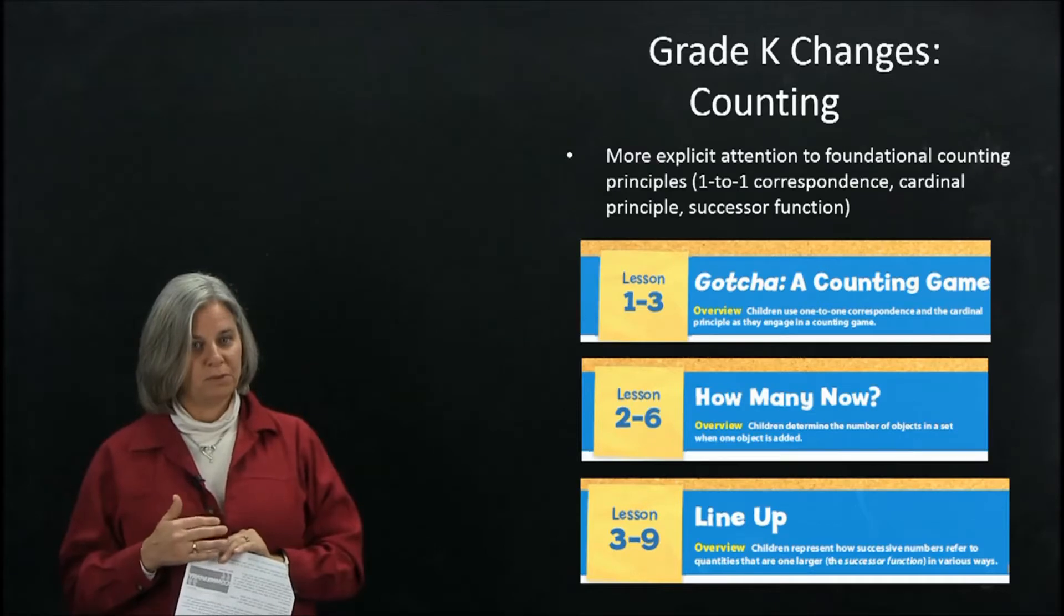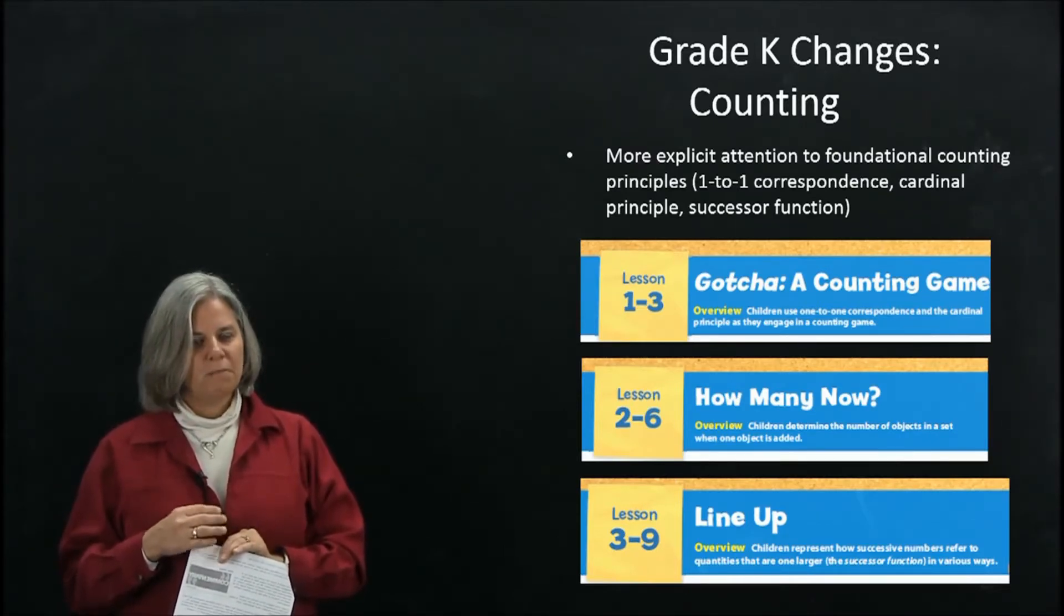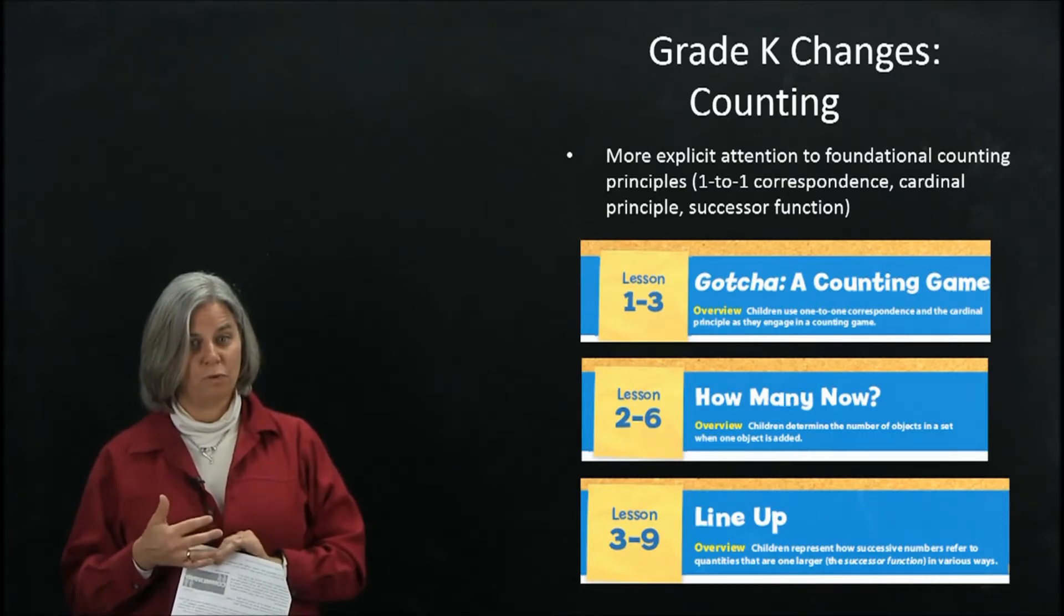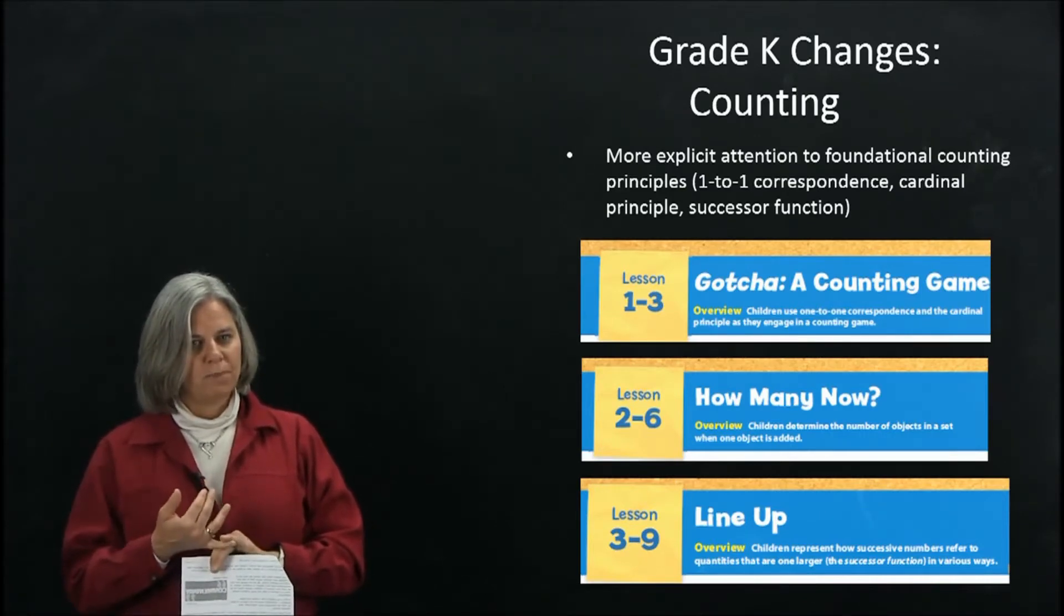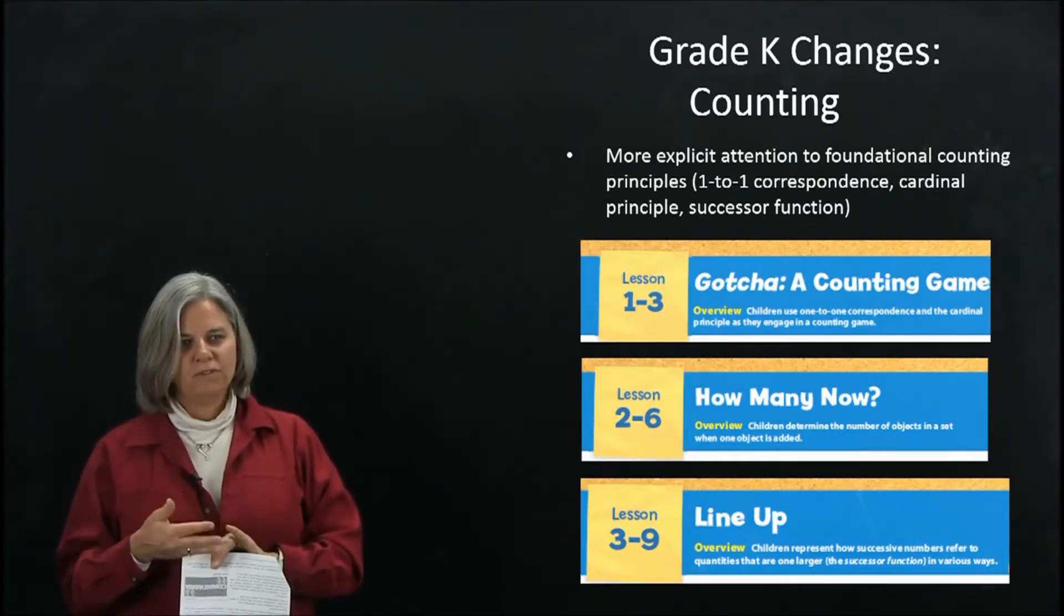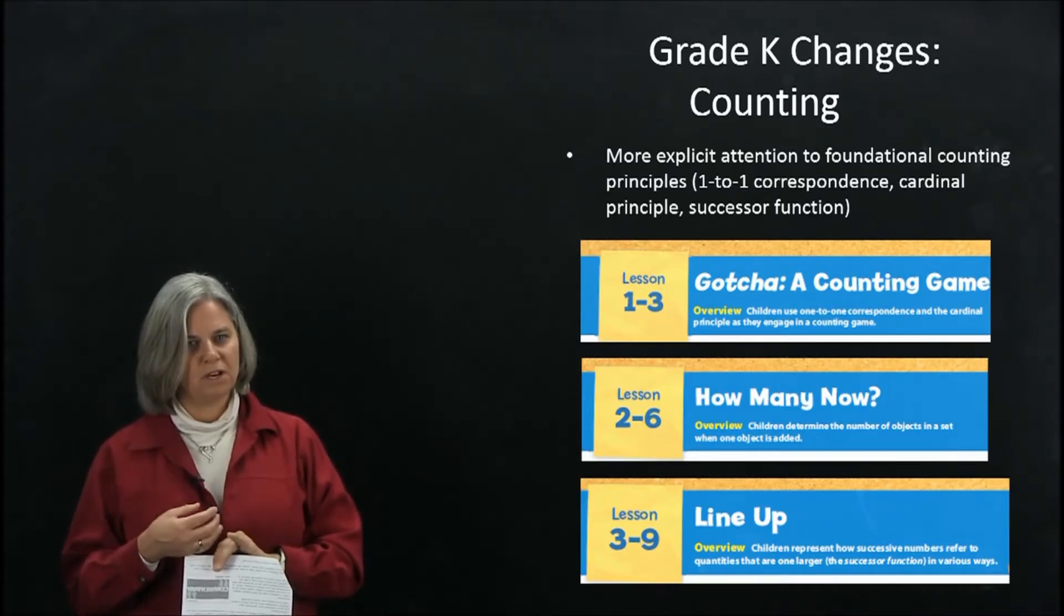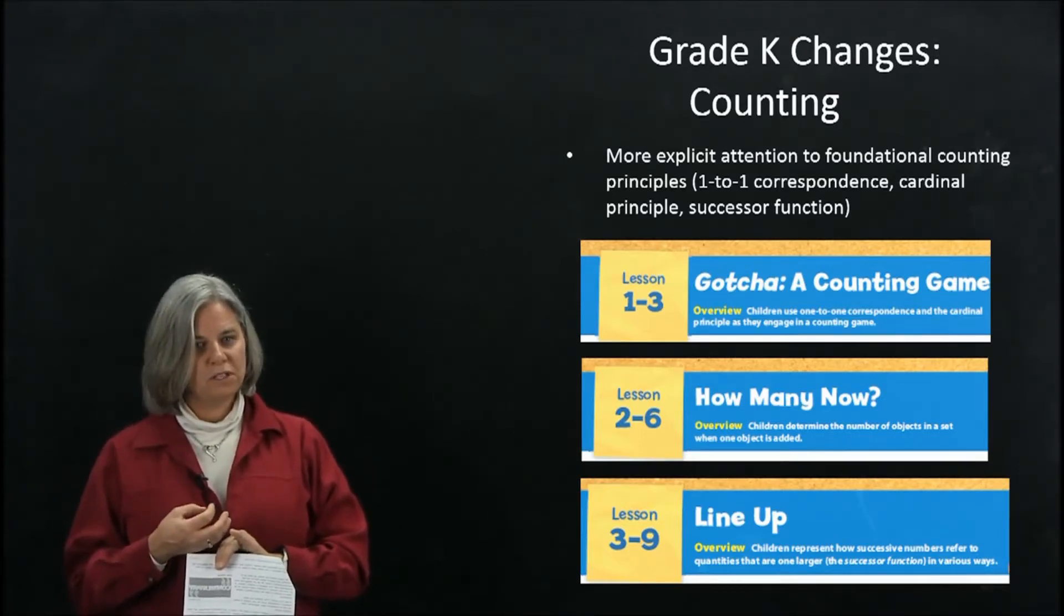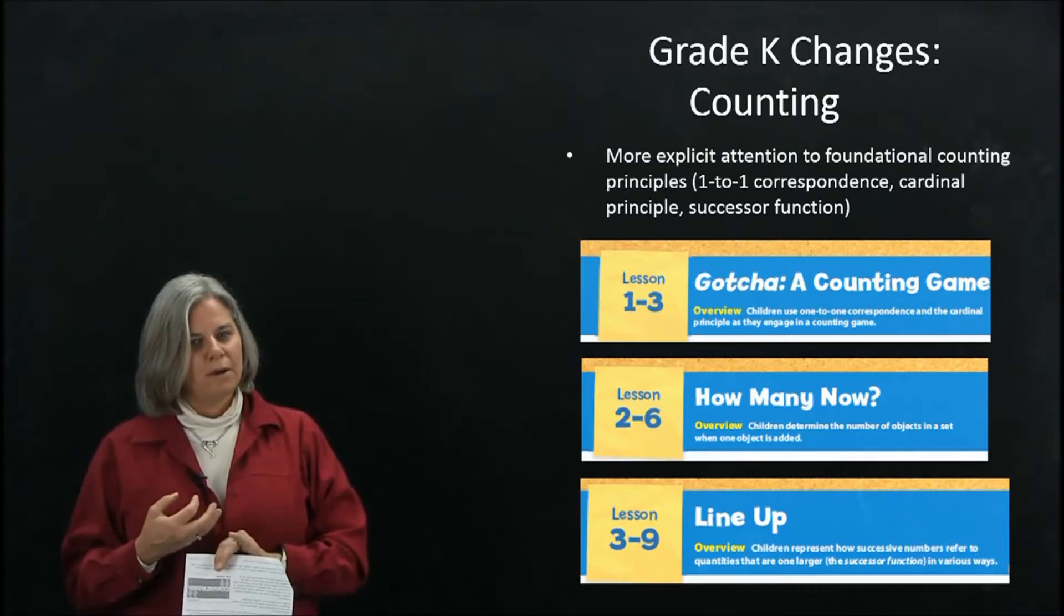The first thing people would notice, particularly because it comes at the very beginning of the teacher lesson guide, is we made much more explicit the attention to foundational counting principles that the Common Core calls for. This is mostly in KCC4: one-to-one correspondence, the cardinal principle, and I think the one that's least known and understood is the successor function. We've really talked about what those things are, taking each of them in turn explicitly.